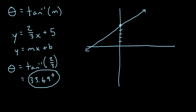I've drawn this line on a graph to visualize it. We can see it crosses the y-axis at 5, so when x is 0, y equals 5. It has a positive slope of 2/3. So what we just found is that the angle between the line and the x-axis is 33.69 degrees. That's the angle of inclination of this line.